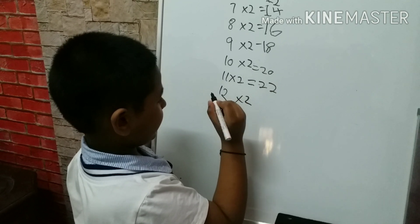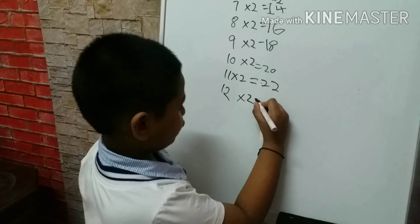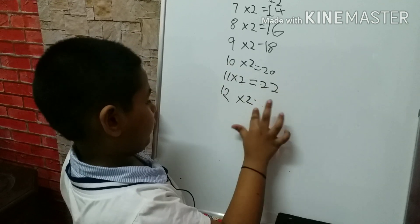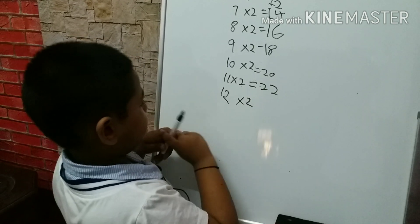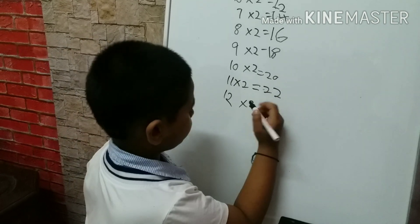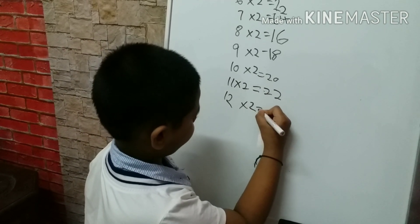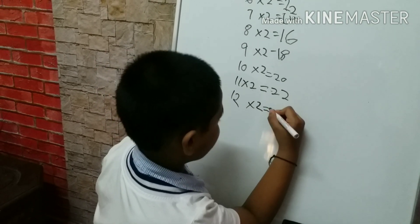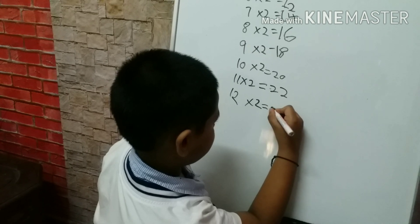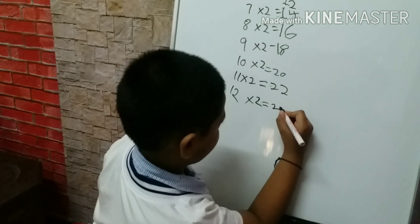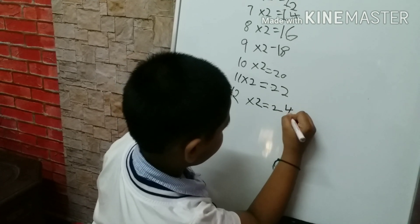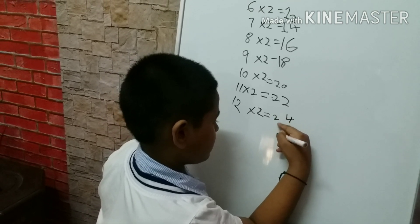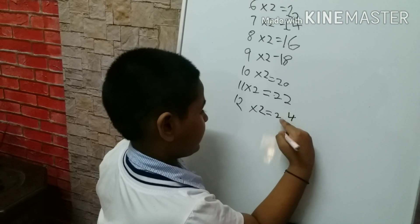Twelve times two — twenty. Twelve times two — twenty. Twelve times two equals twenty-four. Don't forget this number.